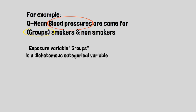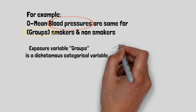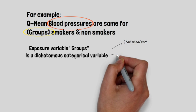Here, the exposure variable groups is a dichotomous categorical variable, so you could either apply a statistical test or some form of regression.